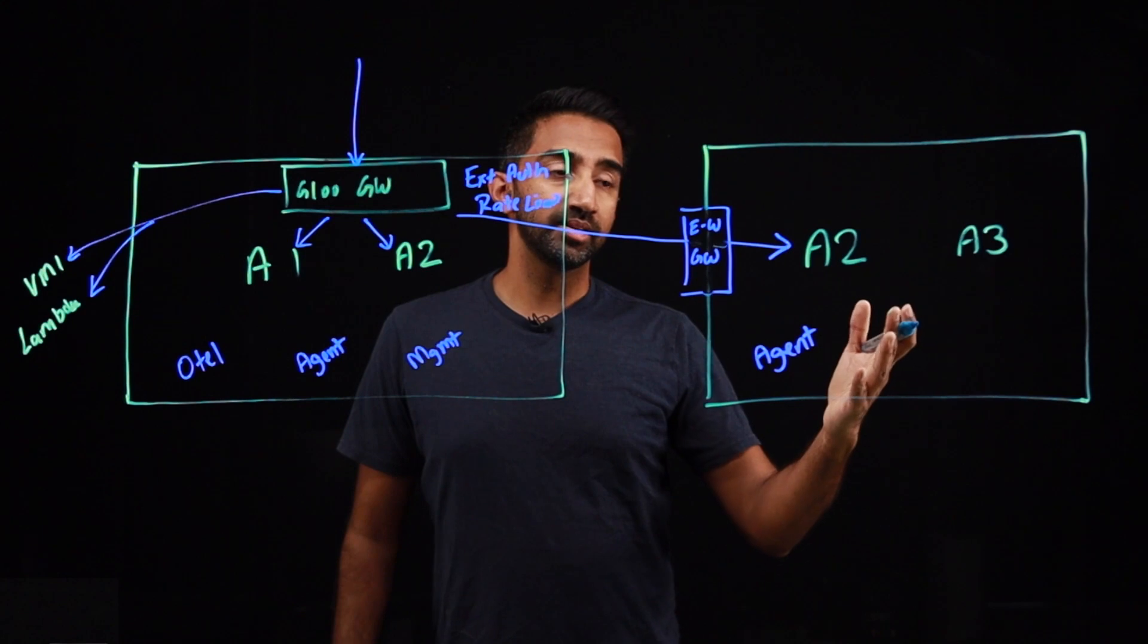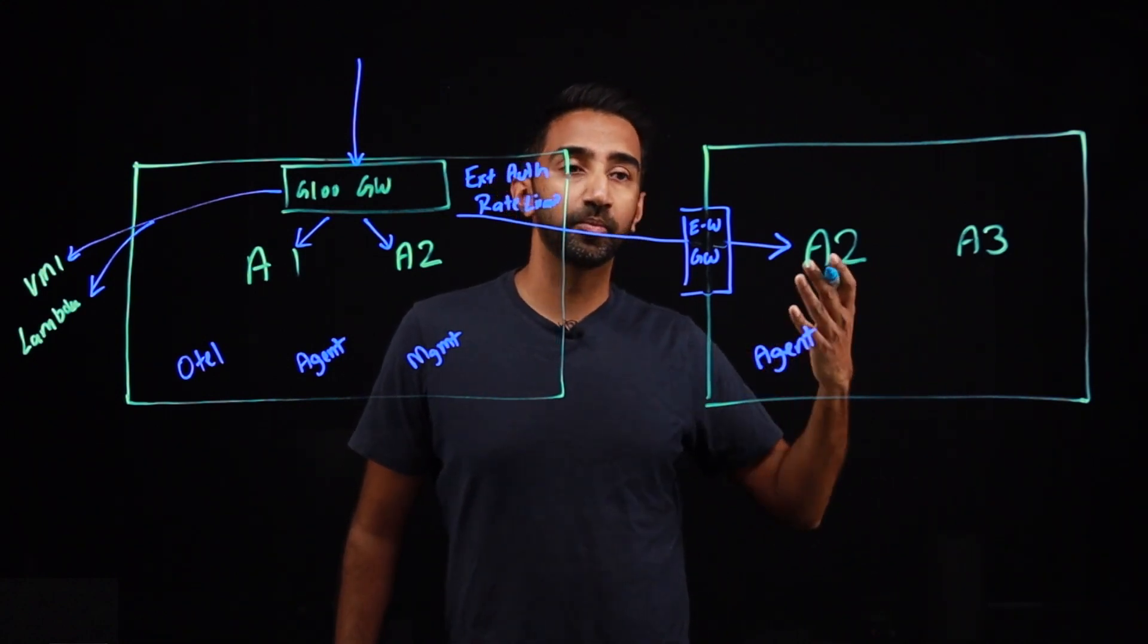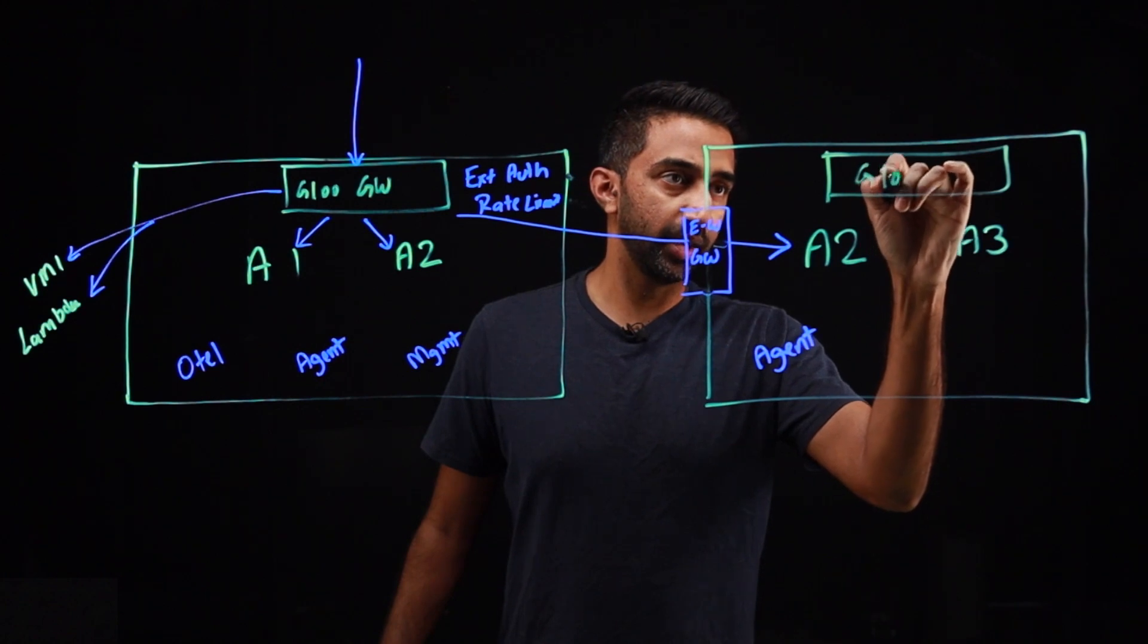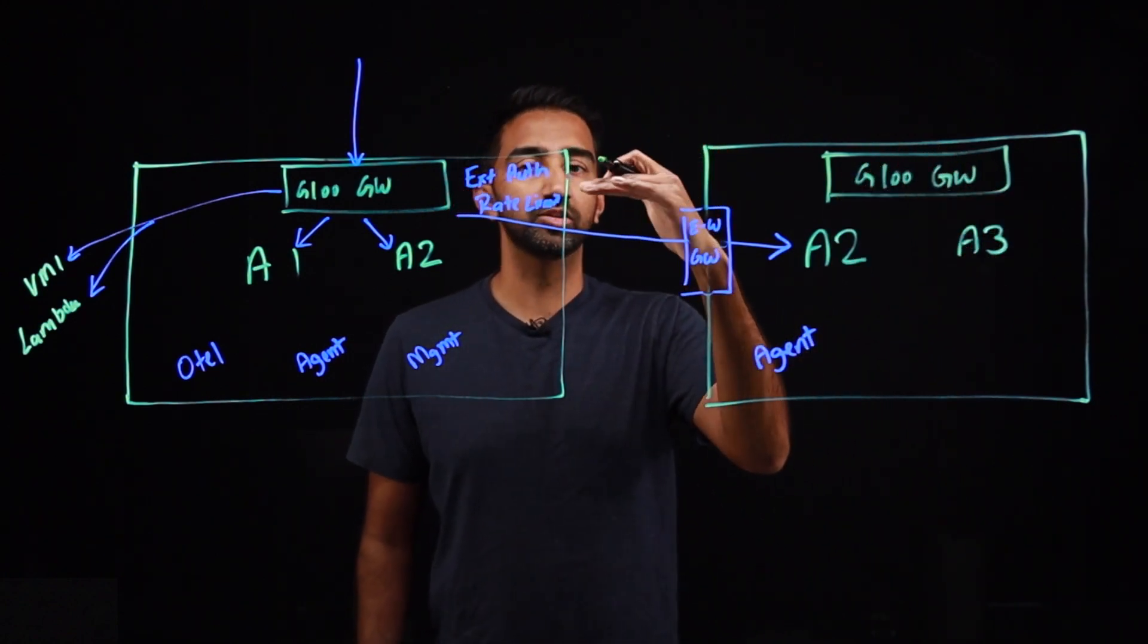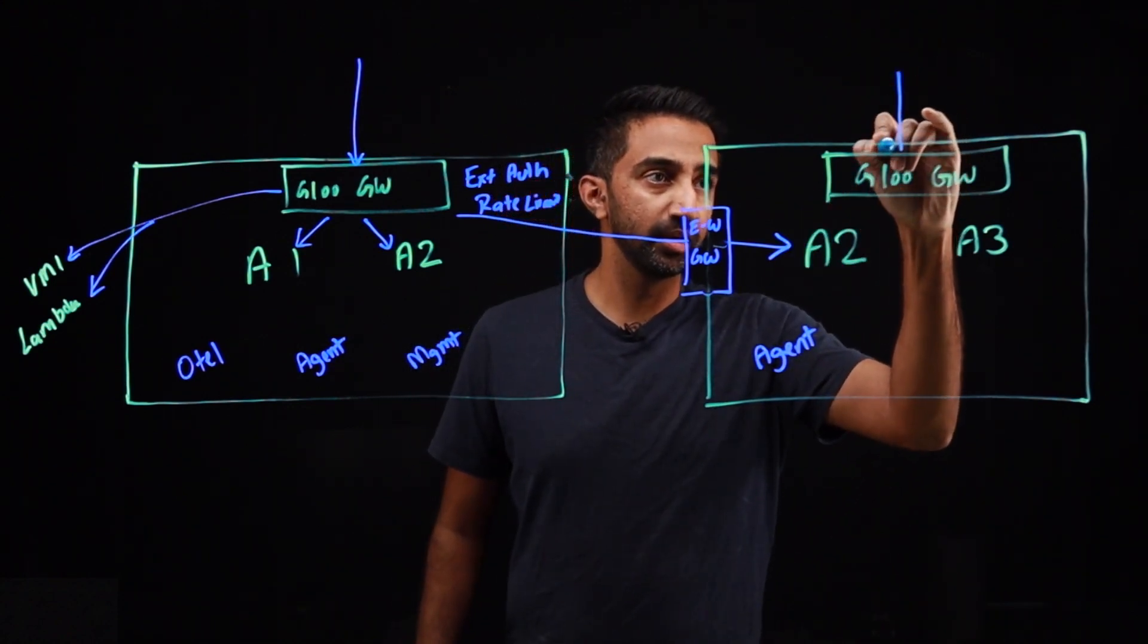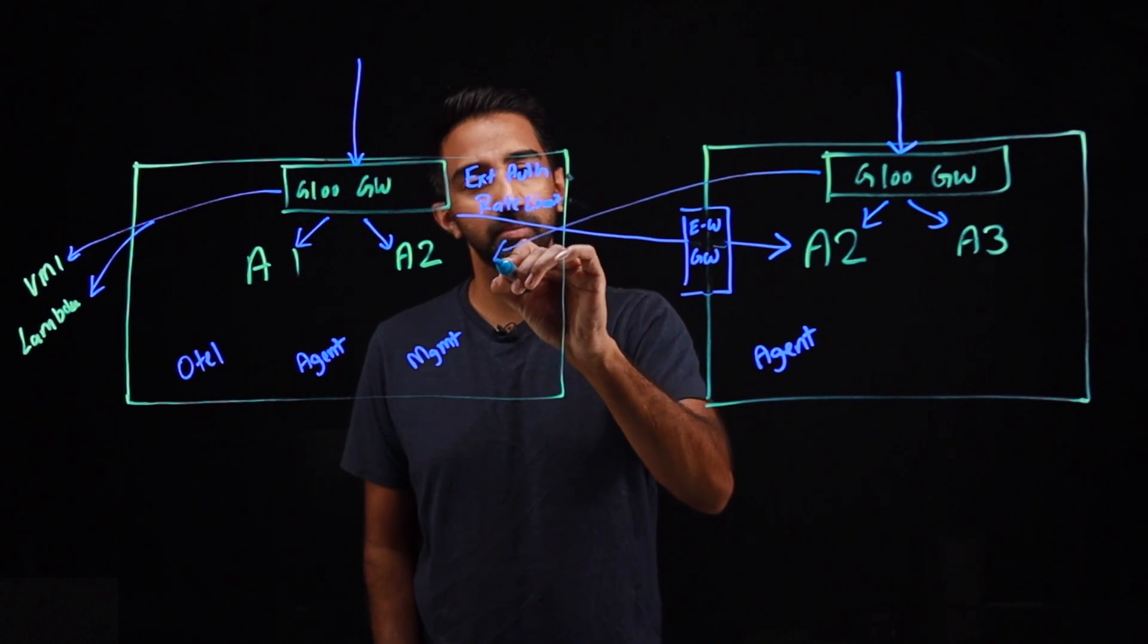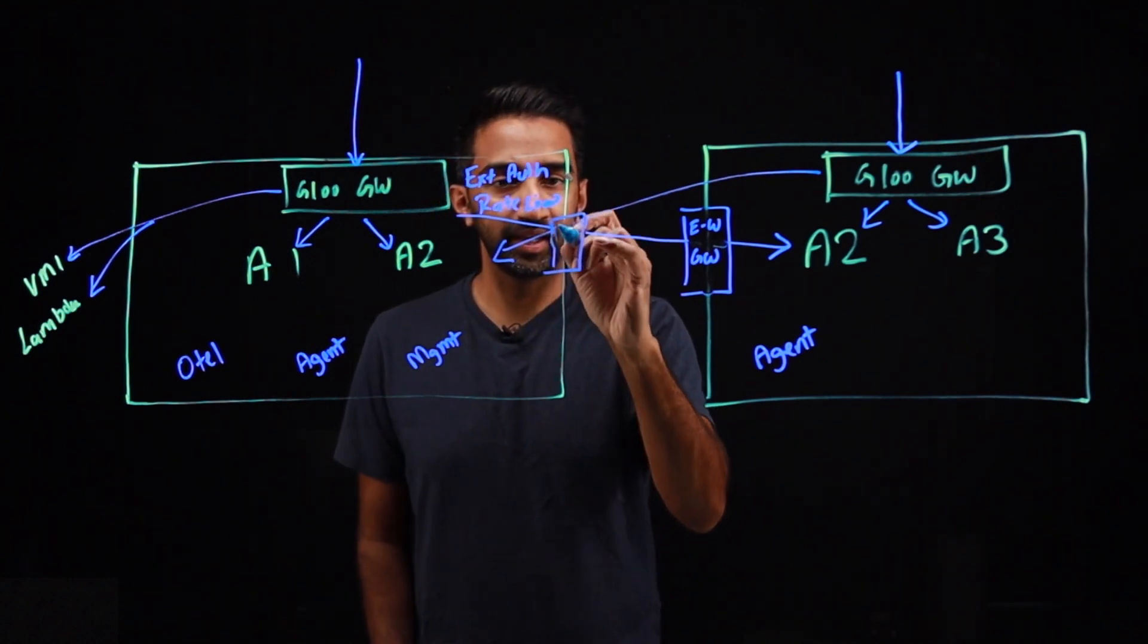In the future, this secondary cluster can also turn into an active primary cluster. In that case, you would deploy another Glue Gateway. Here's Glue Gateway again. And again, this one will come with the same EXOT server, RAID limit server, etc. And now traffic can come to both clusters, cluster 1 and cluster 2, and route to the local clusters, as well as route to the remote services again by leveraging the same east-west gateway.